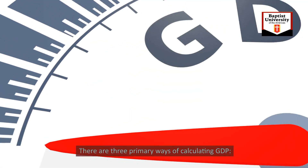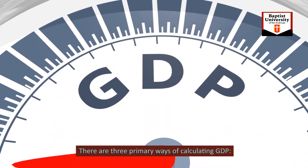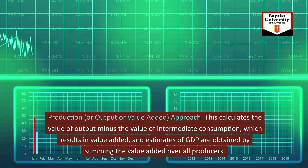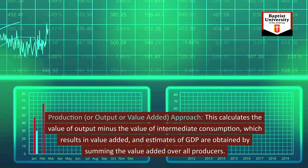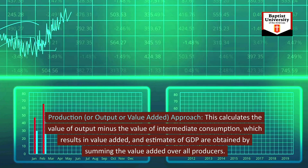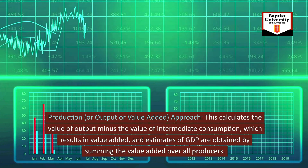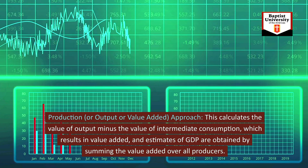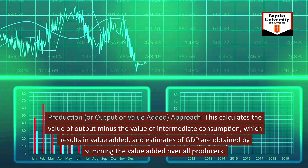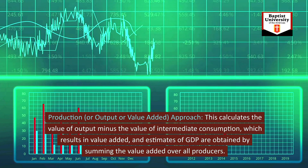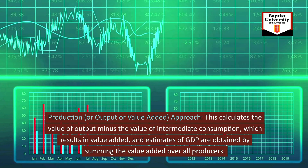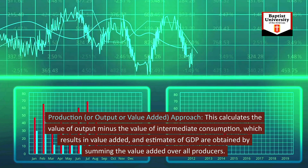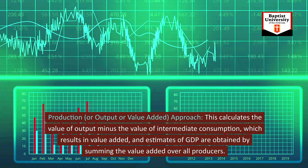There are three primary ways of calculating GDP. The first is the production, output, or value-added approach. This calculates the value of output minus the value of intermediate consumption, which results in value-added, and estimates of GDP are obtained by summing the value-added over all producers.